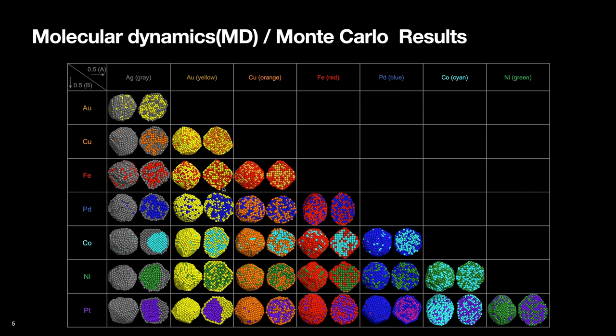Some combinations are mixed, some look like core-shell, and some are Janus-like structures.